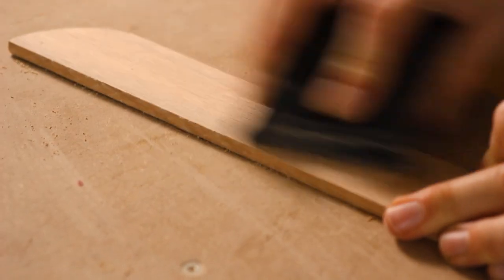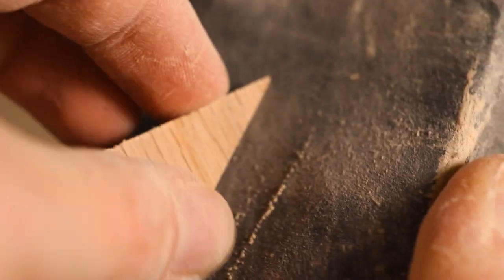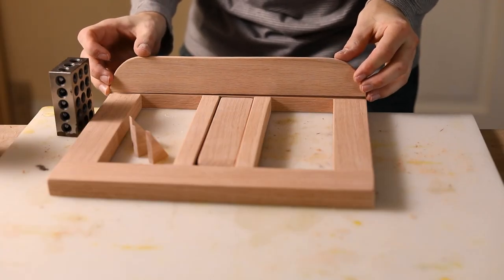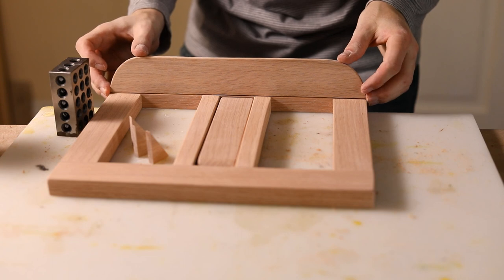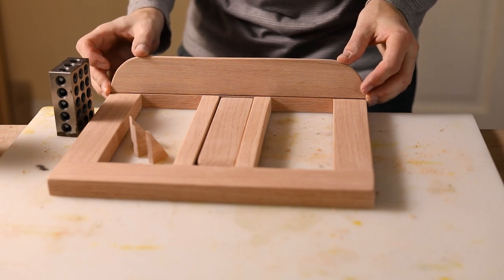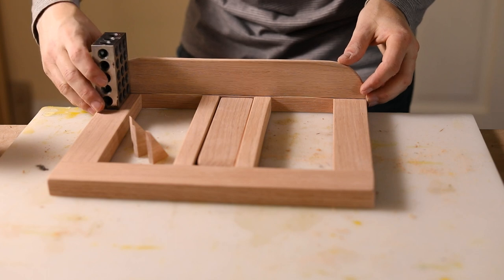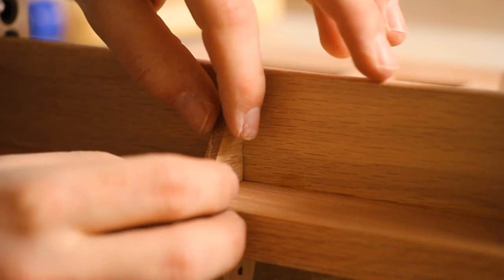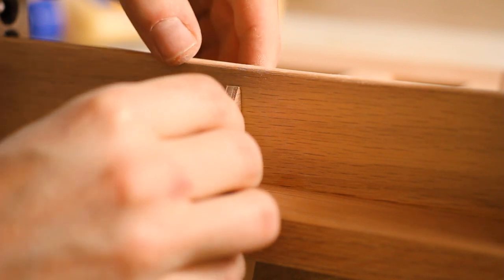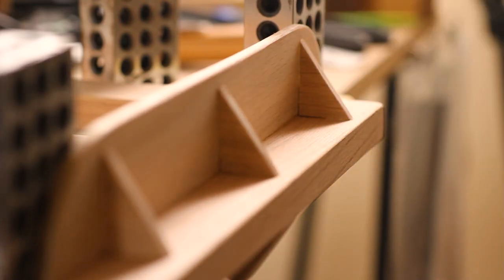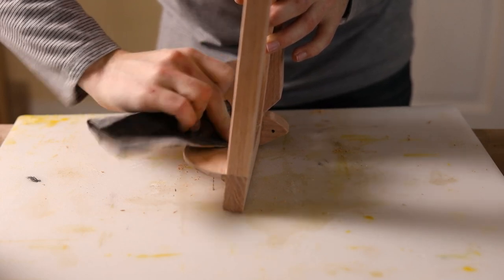The shelf and brackets get sanded and glued to the frame. I rub in some more sanding dust along the top seam to conceal any gaps. Once the glue is dry, I clean up the squeeze out with a chisel and sand it smooth.